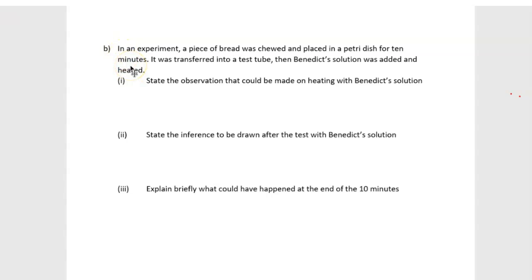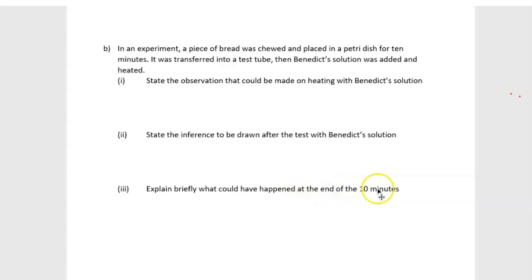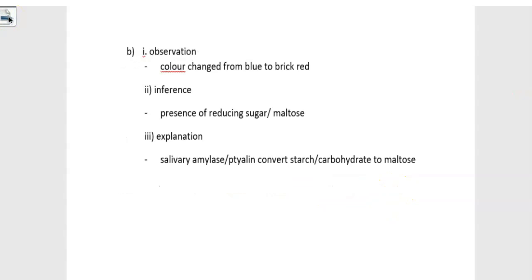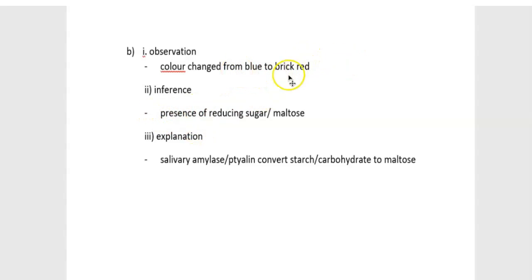Let's go to question B. In an experiment, a piece of bread was chewed and placed in a petri dish for 10 minutes, then transferred into a test tube. Benedict's solution was added and heated. The observation is that the color changes from blue to brick red. The inference is that there is presence of reducing sugar or maltose — because Benedict's solution on reducing sugars gives a color change from blue to brick red.